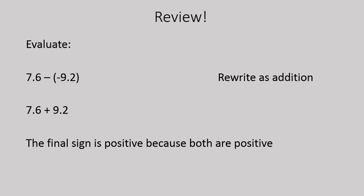Let's do one quick question together before we add variables in there. 7.6 minus negative 9.2. We're going to rewrite this as an addition question. So instead of subtracting a negative, we're going to be adding positive 9.2. The final sign will be positive because both numbers are positive. And we end up with 16.8, positive 16.8.